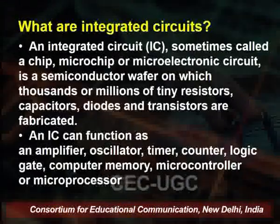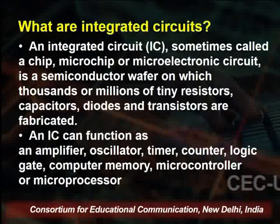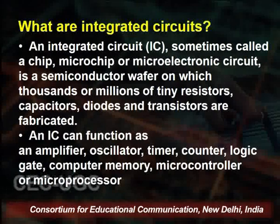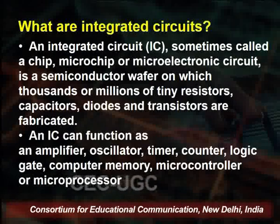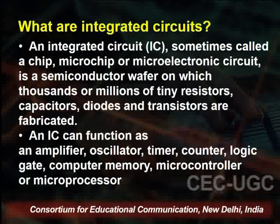Why do we call it a micro electronic circuit? Because we use components of micro size — transistors, resistors and capacitors are all of micro size. So we call it a microchip or micro electronic circuit, and it is mounted on a semiconductor wafer. That wafer is silicon or any semiconductor material. Thousands and millions of tiny resistors, capacitors, diodes and transistors are fabricated on a wafer chip to form the integrated circuit.